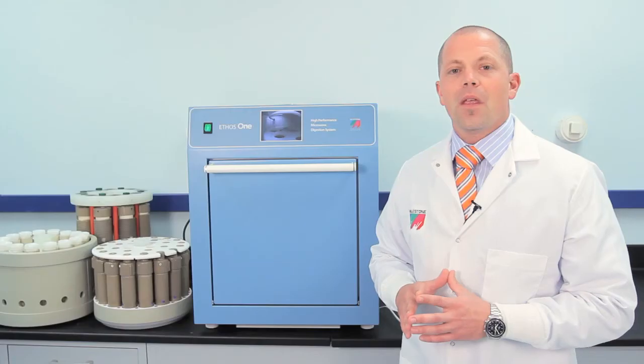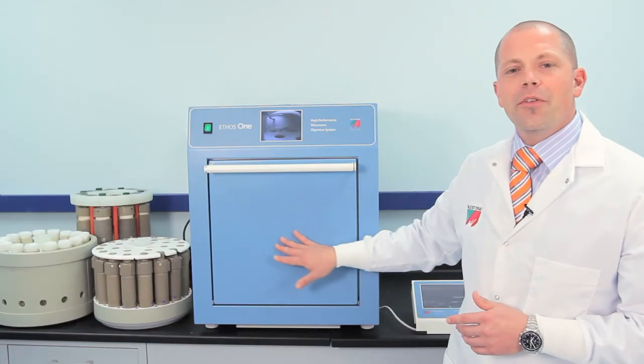The Ethos One is the only microwave system with a cabinet and door made completely from stainless steel. Note, there is no viewing window in the door.